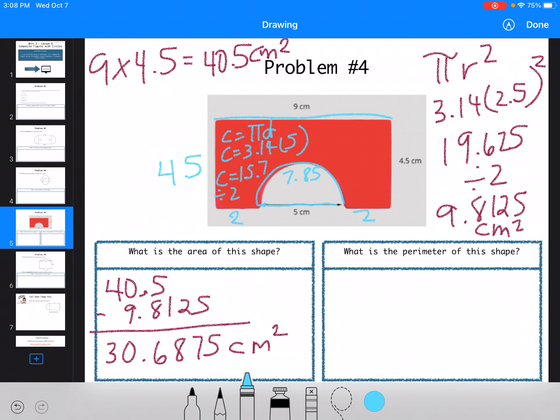Then I'm just going to add up all my sides. So 9 plus 4.5 plus 2 plus 7.85 plus 2 plus 4.5. And I get a total of 29.85 centimeters. It's not centimeters squared because I'm only finding the distance around the outside.